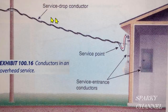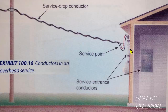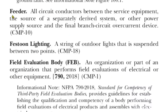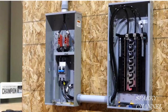Here's the pole, here's the service drop conductor, and here's the service point — this is where the utility has hooked up to your wires. These are service entrance conductors. Here's your meter — there's no service disconnect in this meter, therefore these are service entrance conductors as well. And here in Article 100, here's the definition of feeder: "All circuit conductors between the service equipment, the source of a separately derived system, or other power supply source, and the final branch circuit overcurrent device." So these conductors right here are feeder conductors, and then you would have your circuit breakers with branch circuit conductors coming off of them.